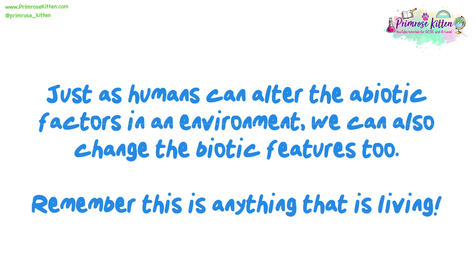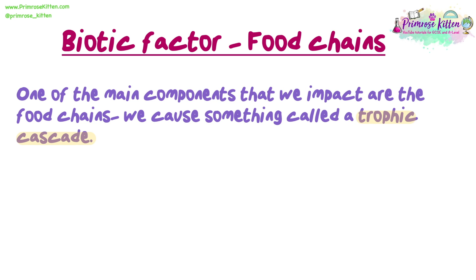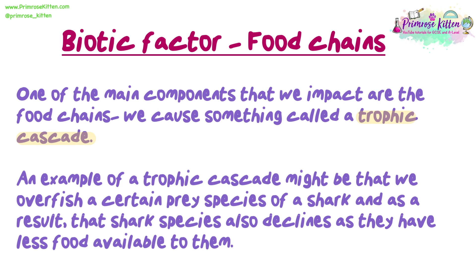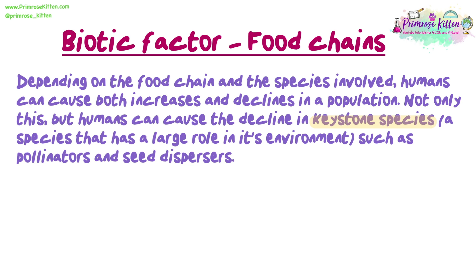Just as humans can alter the abiotic factors in an environment, we can also change the biotic features. One of the main components we impact are food chains — we cause something called a trophic cascade. An example might be overfishing a certain prey species of a shark, causing that shark species to also decline as they have less food available. Depending on the food chain and the species involved, humans can cause both increases and declines in a population.